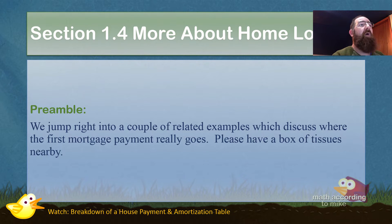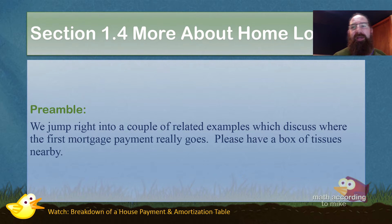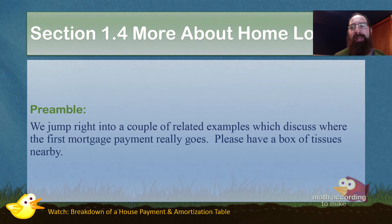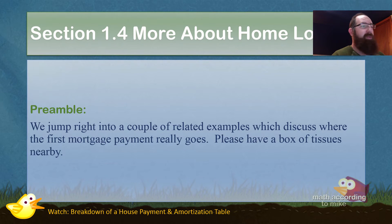Section 1.4 — more about home loans. You thought it was over? Nope. In this section, we're going to talk about what actually happens to your mortgage payment. We're going to make what's called an amortization table, which is the breakdown of what happens to your payment. Then we end off with whether you can actually afford a house or not. Let's first start off with this preamble here.